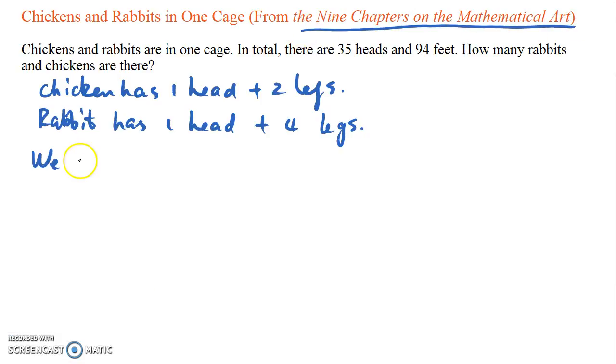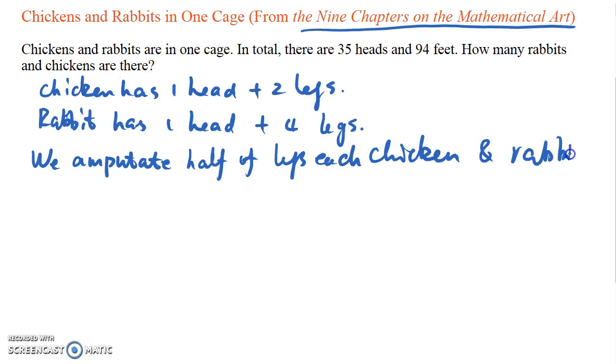So suppose we amputate half of the legs each chicken and rabbit has. Then every chicken becomes one-legged and every rabbit becomes two-legged.